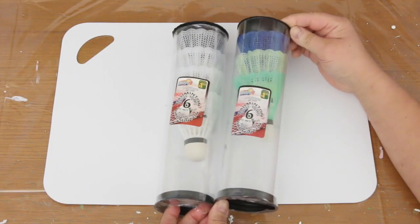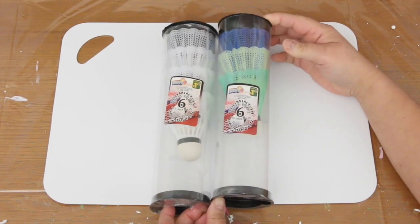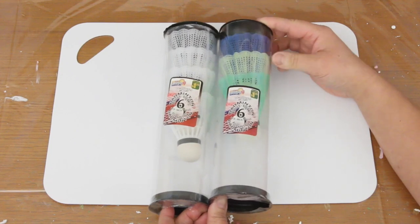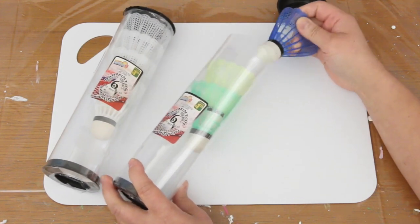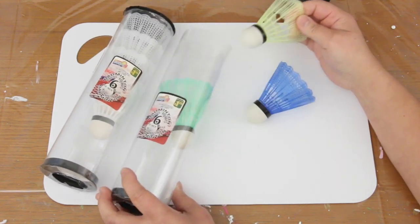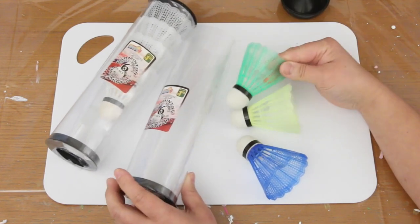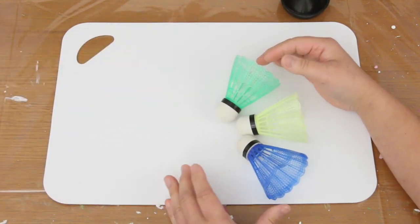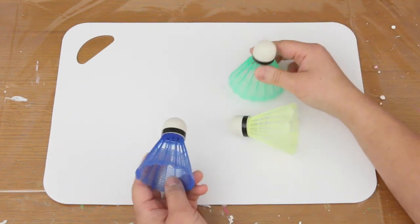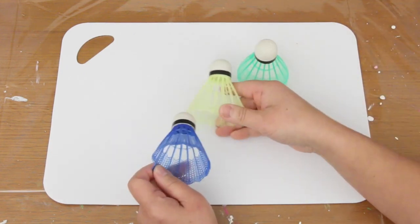I'll be using badminton birdies for the lampshade. Comes in a tube of white or multi-color. They are 6 for $1.25 from the dollar store. I've already used some of them. Some people see badminton birdies, but I see lampshades.